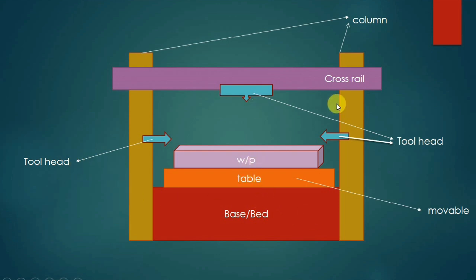Base, table, workpiece, tool heads where the tools are connected - there are three tool heads - cross rail and column where the cross rail slides.